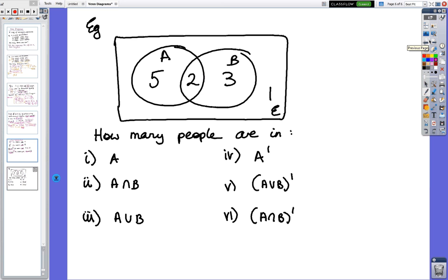Here's some information, who knows what A and B are, but there are my numbers. So the question I'm asking is how many people are in A? We'll start off with the first one. So A is those two numbers, so there's 7 people.